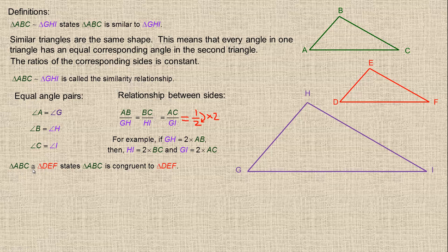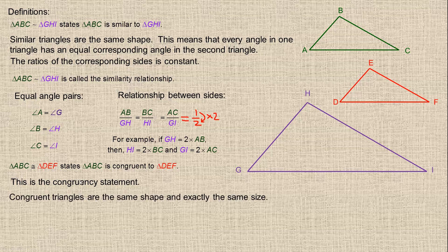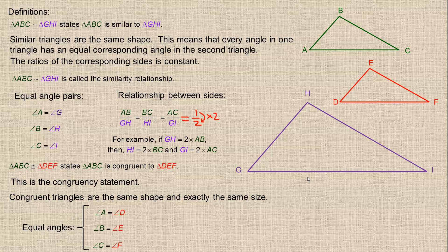Now this statement here — the equal sign with a tilde above it — that's the symbol for congruence. So that says triangle ABC is congruent to triangle DEF. That's the congruency statement. Congruent triangles are the same shape and exactly the same size. There are equal angle pairs, just like in similar triangles: angle A and angle D are equal, angle B and angle E are equal, and angle C and angle F are equal.